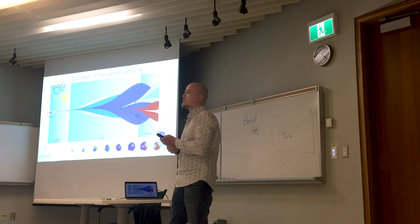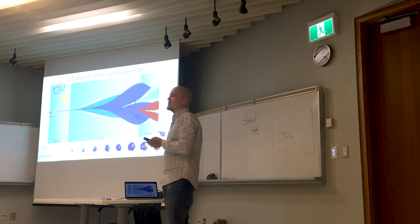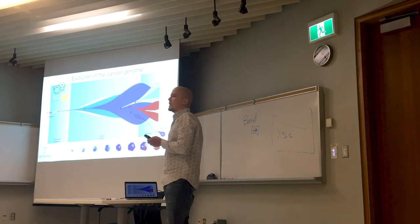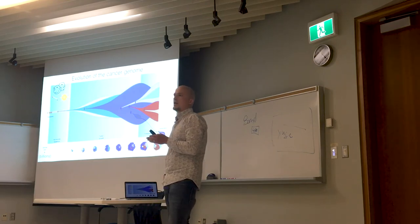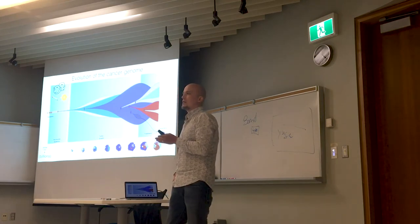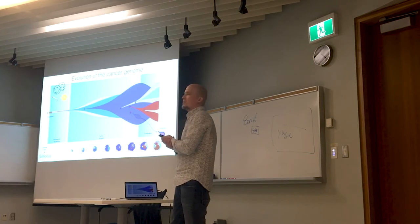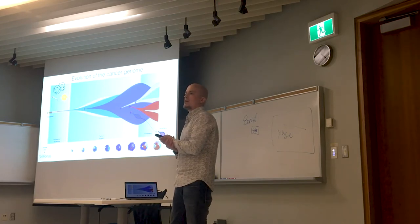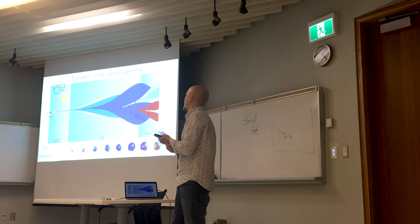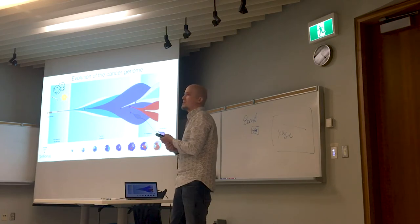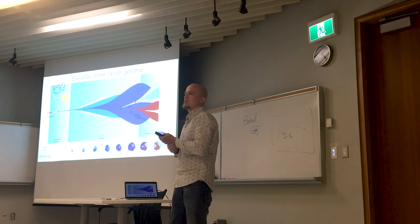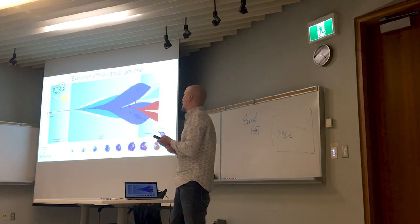Driver mutations — as opposed to passenger mutations — accumulate over time in different cells. Because we have so many cells, all acquiring their own mutations, it's likely that at some point there will be a cancerous cell. The probability of accumulating these mutations is increased by various carcinogens such as tobacco smoke or light from the sun, but also by various endogenous processes of damage repair, some of which can be increased by inheritance.